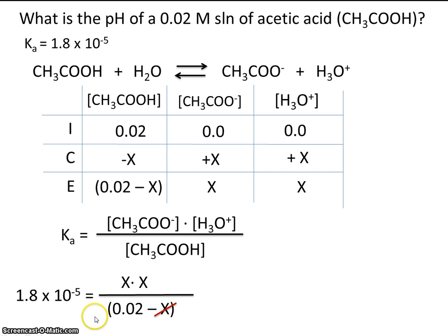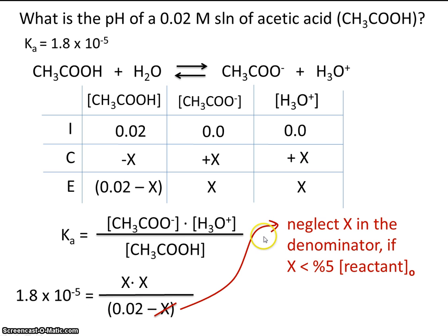Now it turns out that we might be able to neglect x in the denominator. And that will save us quite a bit of time. So let's go ahead and assume that we can neglect x in the denominator. Now this is only the case if this x, that is when we solve for this x, if this turns out to be less than 5% of the initial concentration of the reactants. So remember, brackets mean concentration, and this little sub-zero means initial concentration.